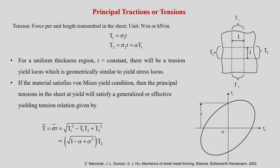Principal traction or tension is force per unit length transmitted in the sheet. t_1 equals sigma_1 times t, and t_2 equals sigma_2 times t. So t_2 equals (sigma_2/sigma_1) times sigma_1 times t, which equals alpha times t_1. Therefore t_2 equals alpha times t_1, and just as sigma_2/sigma_1 is alpha, t_2/t_1 is also alpha — both are one and the same.